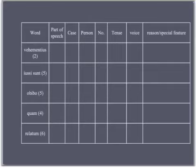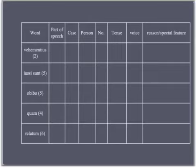Then we have the word 'quam.' Quam is a relative pronoun. Its case is accusative. It doesn't have a person. It is singular. It doesn't have a tense or voice. Its reason or special feature is that it is describing the object in its own particular clause. Remember that a relative clause goes in the same number and the same gender as the noun it describes, but it takes the case required within its own clause. The sentence reads: 'I shall die in the fatherland which I have saved so often' — quam here is the object of its own clause.